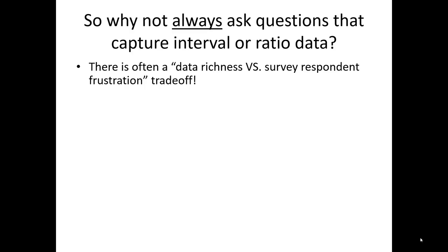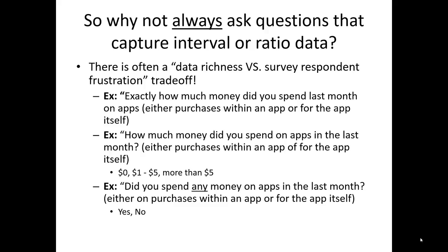Something that emerges once we realize some of these facts about measurement level is: why shouldn't we just always capture high-quality data, interval or ratio-level data? The answer is, well, we should — if we can collect interval or ratio-level data with no downside, we should in fact do so. However, there is often a data richness versus survey respondent frustration trade-off. Consider these three different questions: Exactly how much money did you spend last month on apps, either purchases within an app or for the app itself?